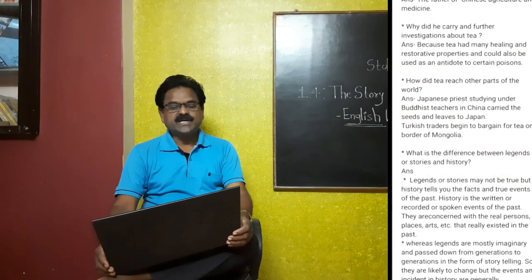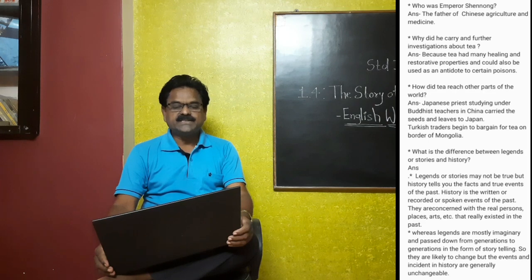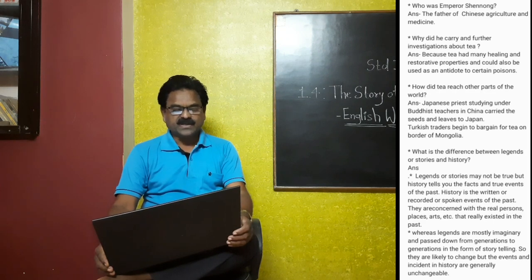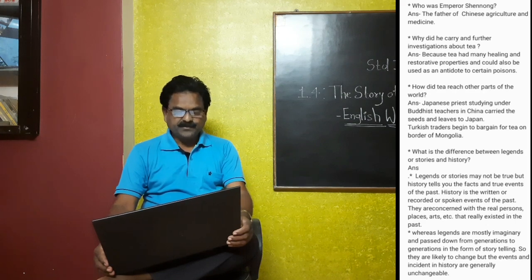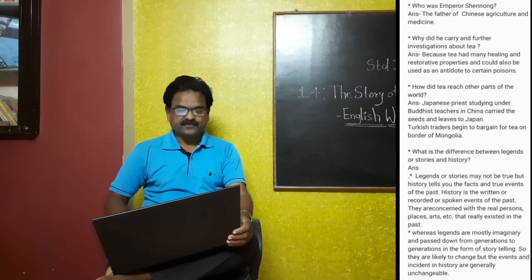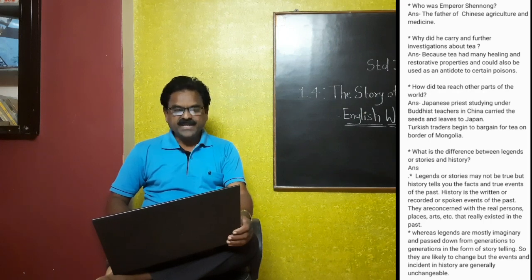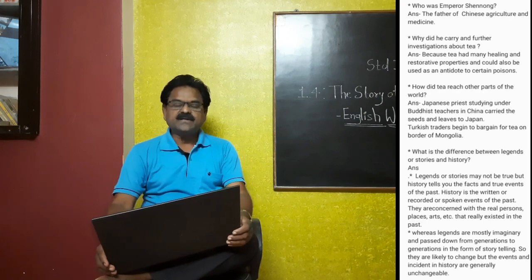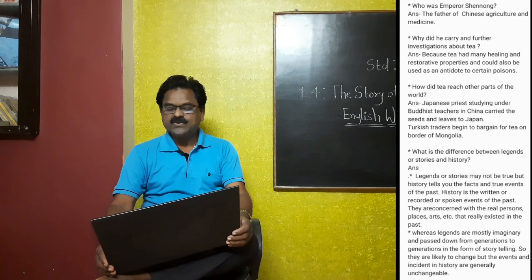Who was Emperor Shenang, the father of Chinese agriculture and medicine? Why did he carry out further investigations about tea? Because tea had many healing and restorative properties and could also be used as an antidote to certain poisons. How did tea reach other parts of the world? A Japanese priest studying under Buddhist teachers in China carried the seeds and leaves to Japan.